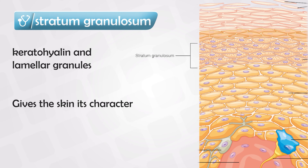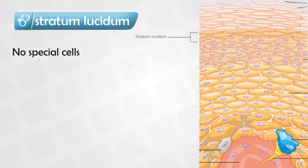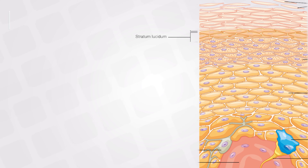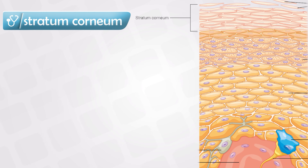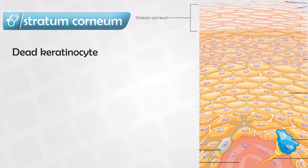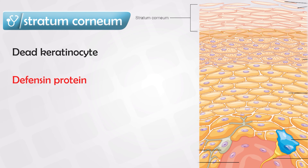The stratum granulosum is responsible for the strength of the skin. The stratum lucidum is a very thin layer without a very significant function. Finally, the thickest layer, the stratum corneum, is about 20 to 30 cell layers and is the uppermost part. This layer is made up of dead keratinocytes, also known as anucleated squamous cells — squamous cells without a nucleus. When alive, these cells contained a protein known as defensin; now that they are dead and form the outer layer, this protein is secreted outward as part of the first immune defense.